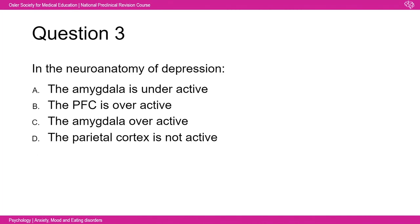Question three: in the neuroanatomy of depression, which is true? The correct answer is that the amygdala is overactive. The amygdala controls emotions, so its overactivity suggests heightened emotional response. The prefrontal cortex, associated with reasoning and rationalising thoughts, would be underactive in depression because it is less effective at controlling and rationalising thoughts — which is clearly happening less in depression.